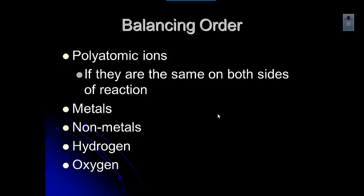Here's an order for balancing that usually works. If you have polyatomic ions that are the same on both sides — like nitrate on both sides — balance those first. Then balance metals, then nonmetals, and leave hydrogen and oxygen for last. That's partly because they're diatomic, so it helps to save them for the end.